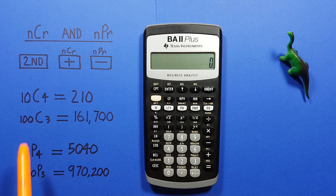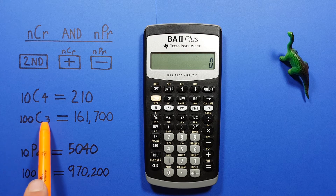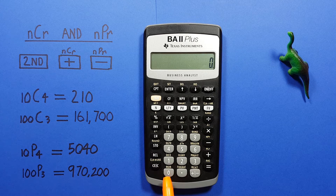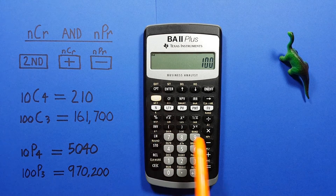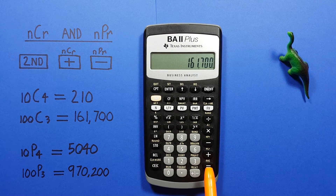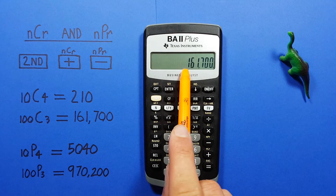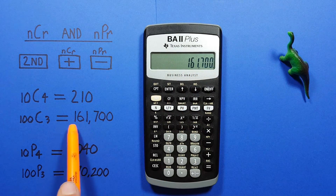Another example — let's say we're given 100 choose 3 combinations. Enter the 100 first, second function, plus, and then 3, equals. We see we get a result of 161,700 possible combinations.